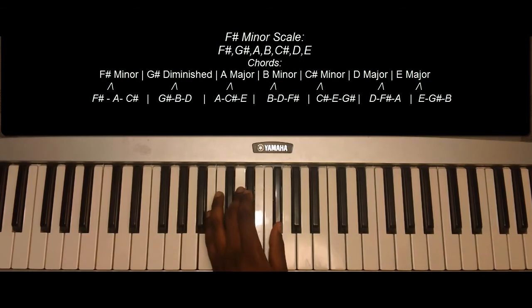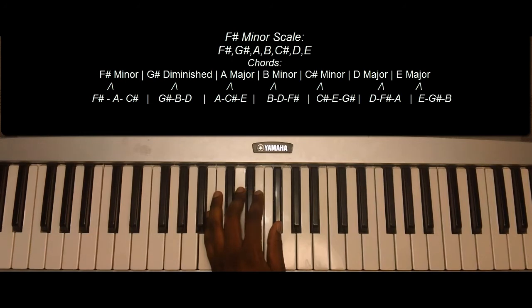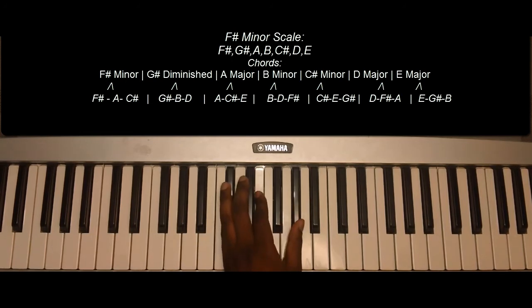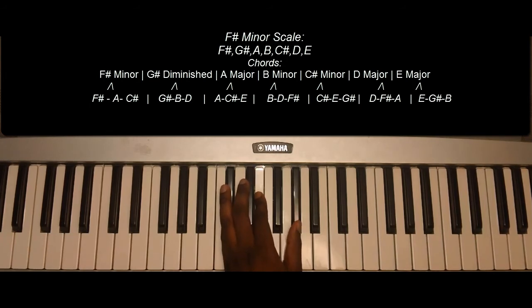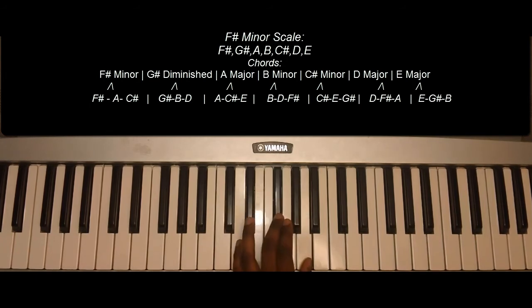B minor: B, D, F-Sharp. C-Sharp minor: C-Sharp, E, G-Sharp. D major: D, F-Sharp, and A.